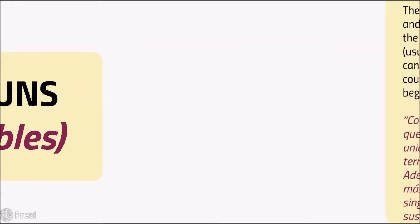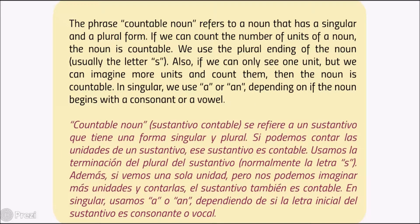Countable nouns. The phrase 'countable noun' refers to a noun that has a singular and a plural form. If we can count the number of units of a noun, the noun is countable. We use the plural ending of the noun, usually the letter S. Also, if we can only see one unit but we can imagine more units and count them, then the noun is countable. In singular, we use 'a' or 'an' depending on whether the noun begins with a consonant or a vowel.